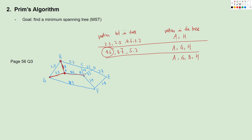We look at the edges between vertices not in the tree and the four vertices in the tree. From B, we have BC at 2.4, BD at 3.5, BF at 3.4. From G, we have GF at 8.7. From H, we have HC at 5.2. We choose the smallest, which is 2.4, so we connect BC.